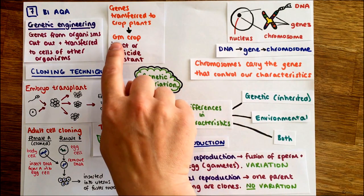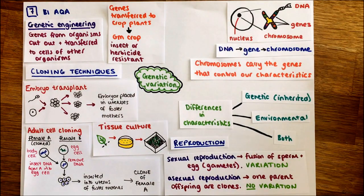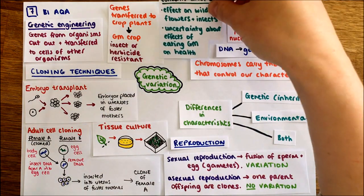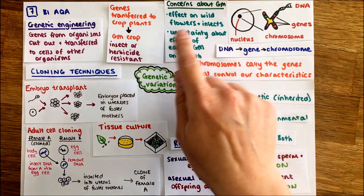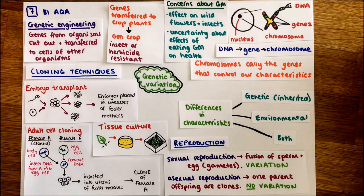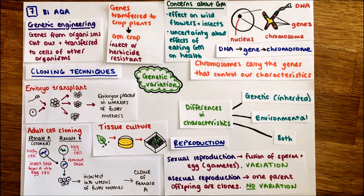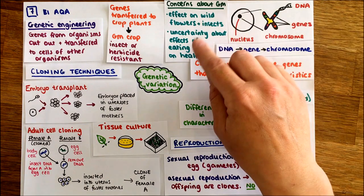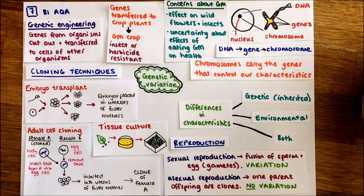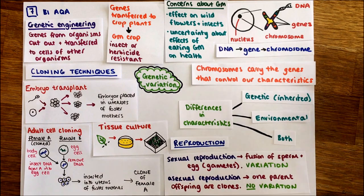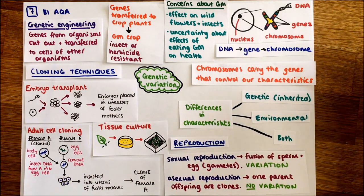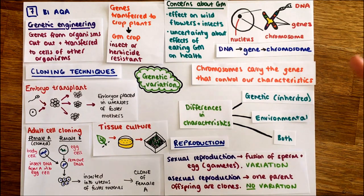Once a gene has been transferred, the plant is called a GM crop - a genetically modified crop. However, there are concerns. The main ones revolve around the effects on wildflowers and insects - we don't really know whether those genes could be passed on through pollination into wildflowers, creating super weeds, for example. We also don't fully know the effects of eating genetically modified crops on our health. That's still being tested and remains an ethical debate regarding genetically modified plants.